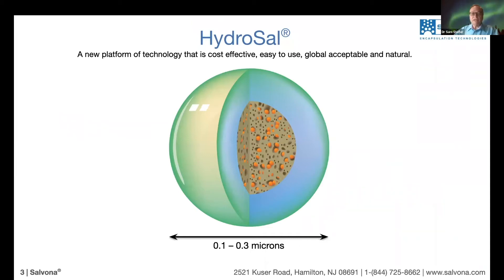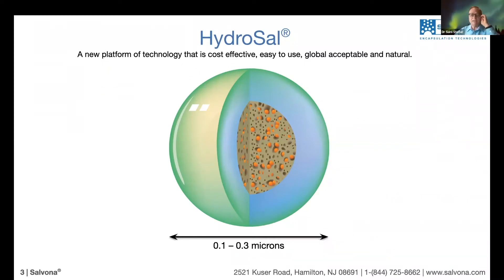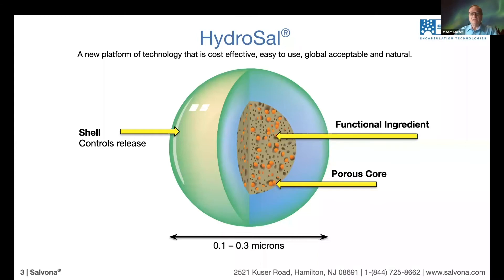The structure is as follows: there is a core, a very porous material, and the active or functional ingredient is encapsulated within the core. Then there is a shell, and the shell is the factor that limits the release rate. The active ingredient is always inside the core. Active typically relates to regulated pharmaceutical ingredients, while functional ingredient is typically used for cosmetic activity.